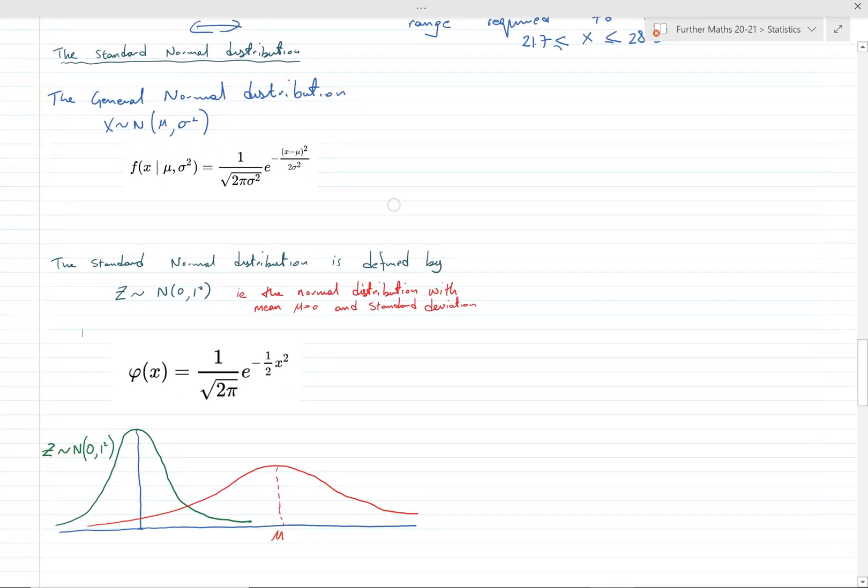Before that, I just can't resist the temptation to do a bit of talk about the pure maths involved in here. This is the PDF of the general normal distribution with mean mu and standard deviation sigma, whereas this of course is the PDF for the standard normal distribution, so you're replacing mu with zero and sigma with one.